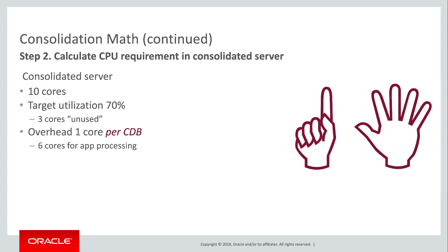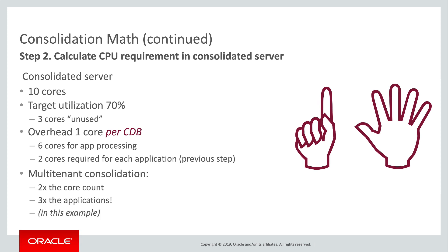This leaves six fingers for application processing. We previously determined that we need two cores for application processing, and here we have six cores available. So in this example, with two times the number of cores, we can support three times as many applications when consolidating with multi-tenant. And we started with a server that was 60% utilized, which is not bad at all.